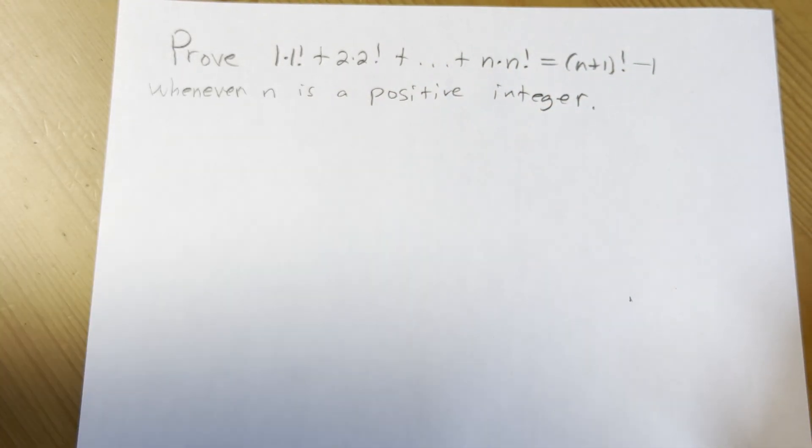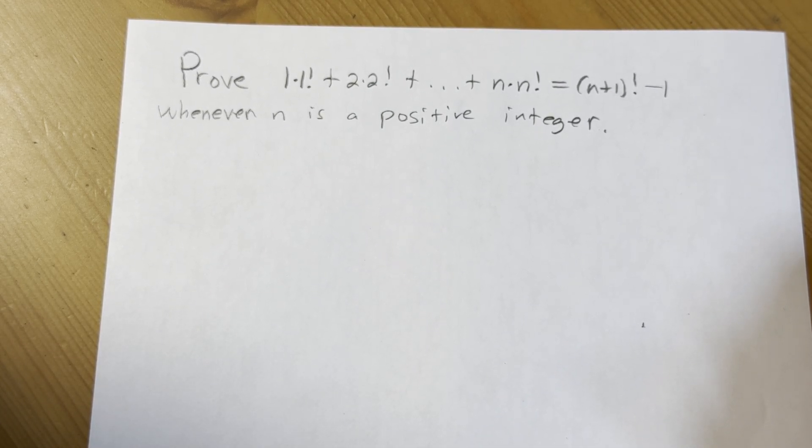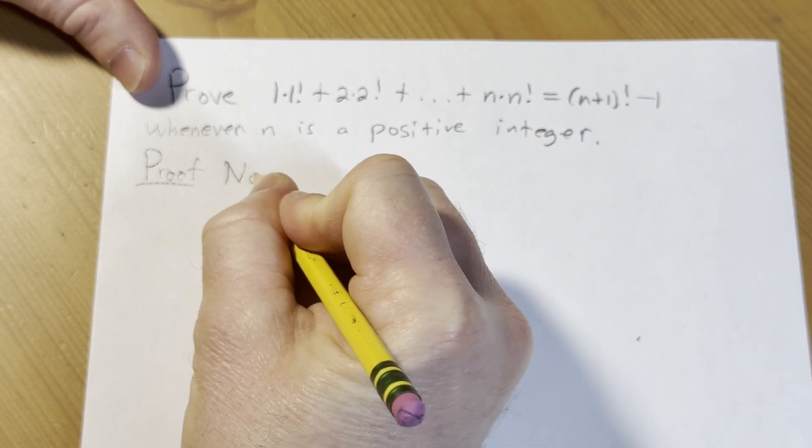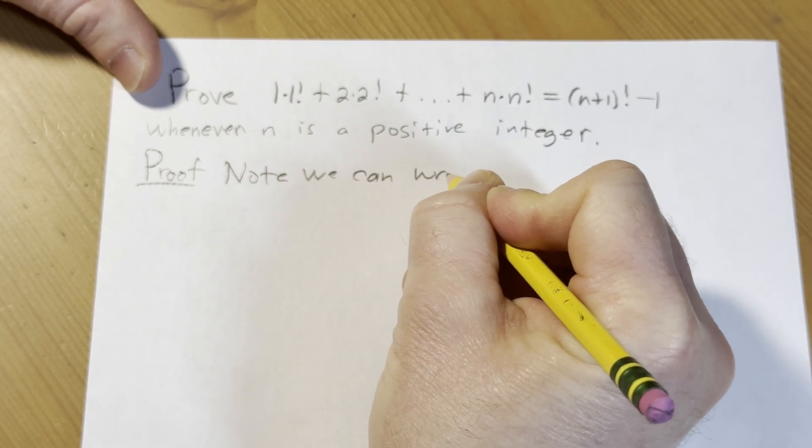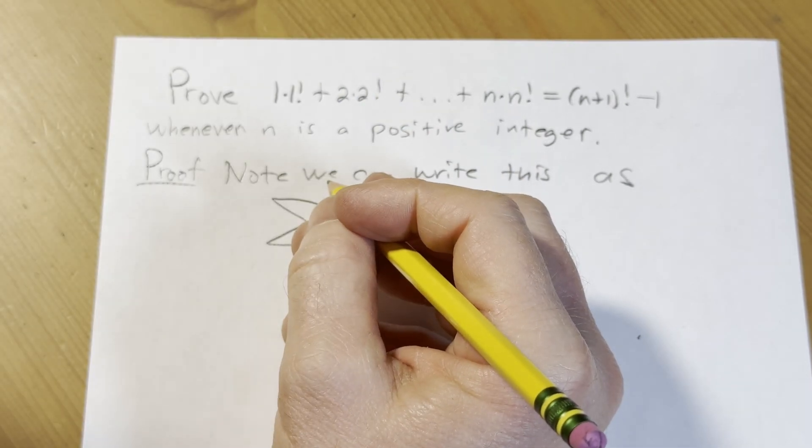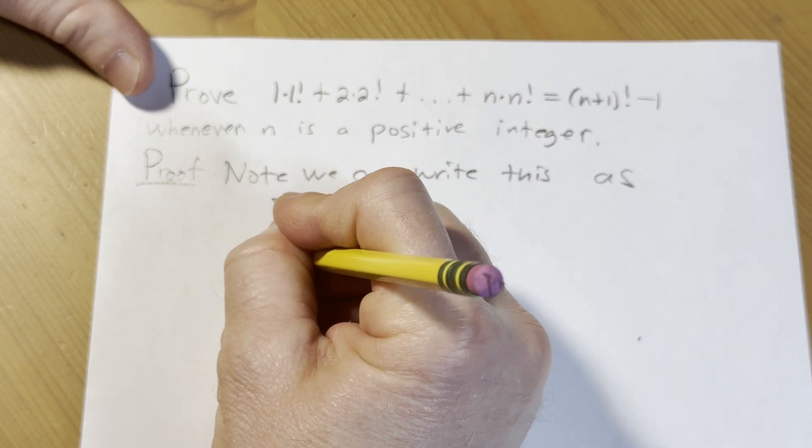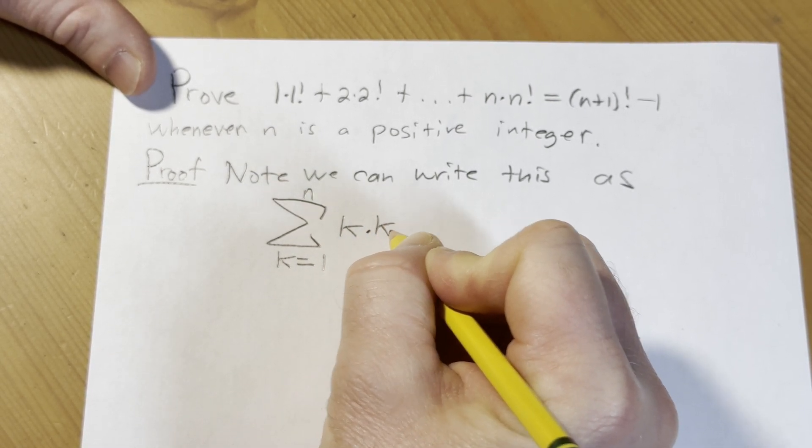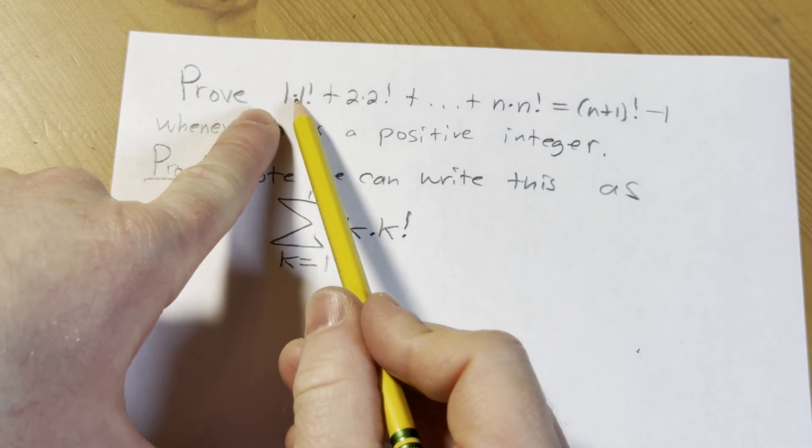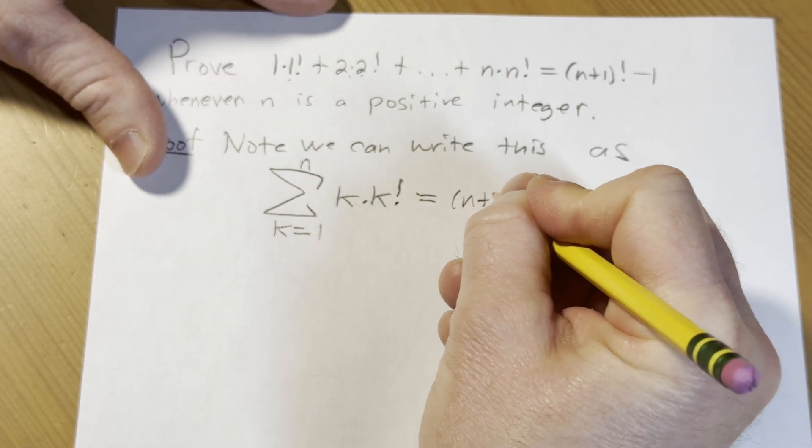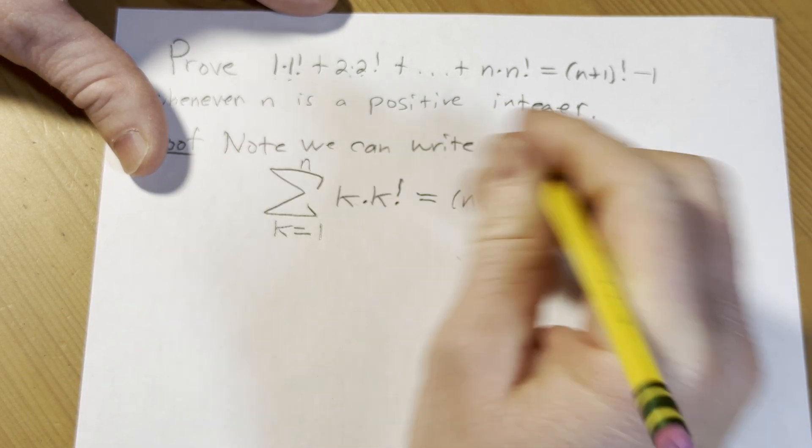So basically we're proving this for all positive integers. Now I am going to rewrite this in a different way just so I can think about it and figure it out because I haven't done this problem. So solution or proof. Note, we can write this as we can use sigma notation or summation notation and let's use, I guess I can use, I'll use k. k goes from 1 to n and then here we have k times k factorial, right? That should be, that looks correct, right? That should be the left-hand side. And this should be equal to n plus 1 factorial minus 1.